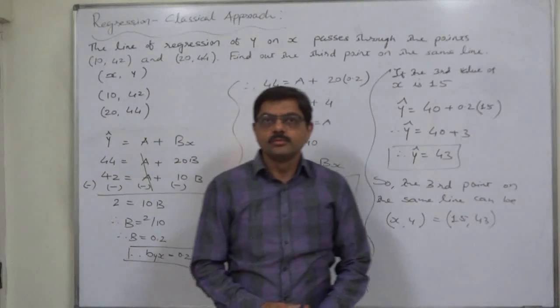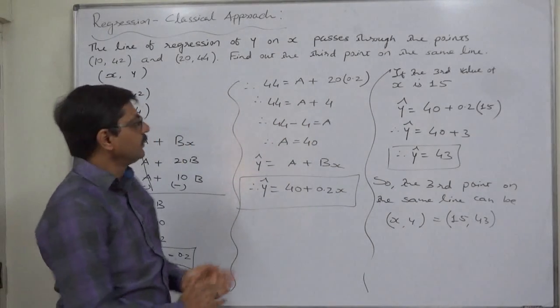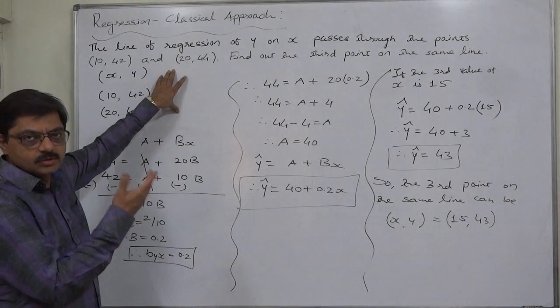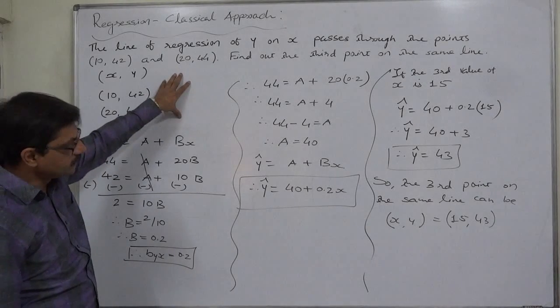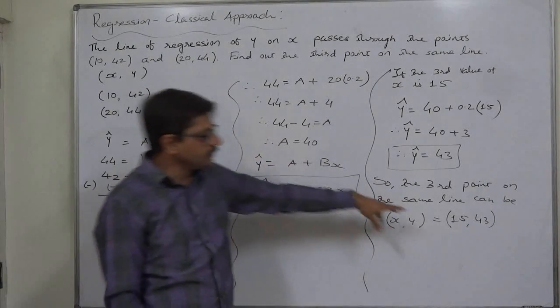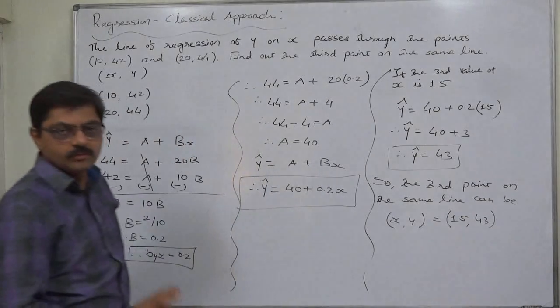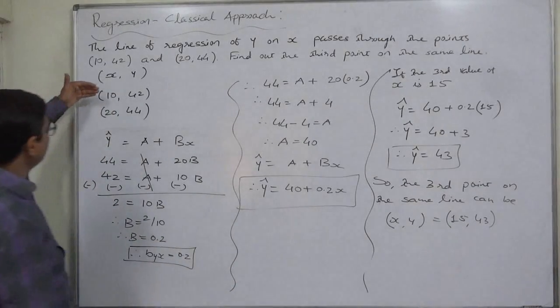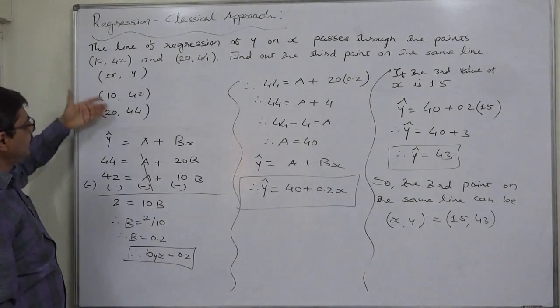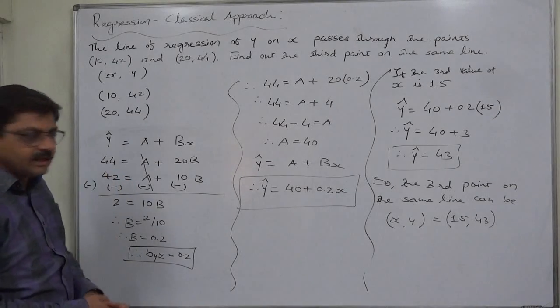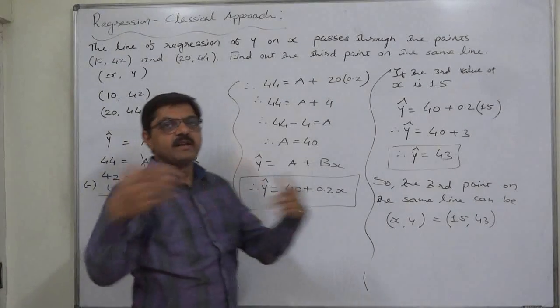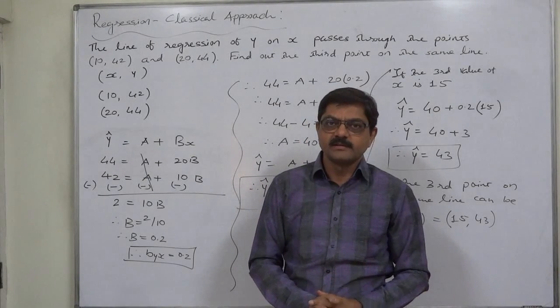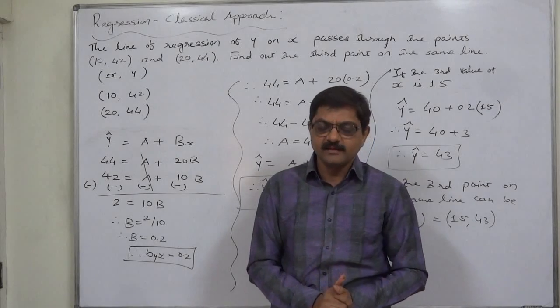I suggest you to do two things: one, take a graph paper, draw the line of regression of y on x on that graph paper on the basis of this, and try to find out the same third point. Also find out some more points by taking value of x less than 10, by taking value of x greater than 20, in this equation as well as on the line which you have drawn on the graph paper. That is your exercise on the basis of this case. That's it, thank you very much.